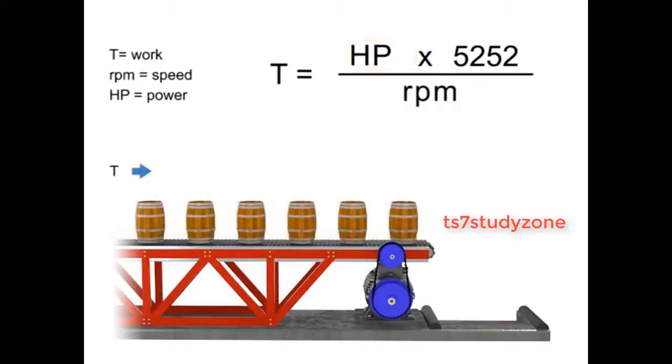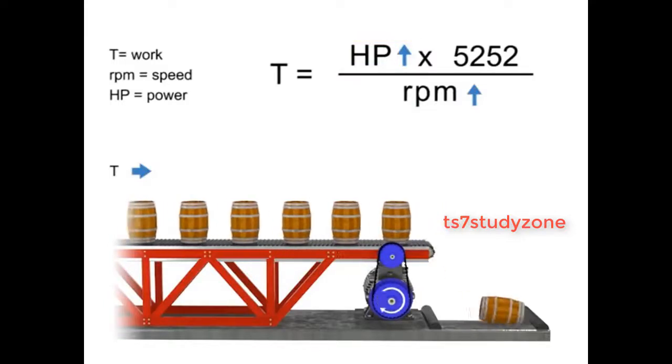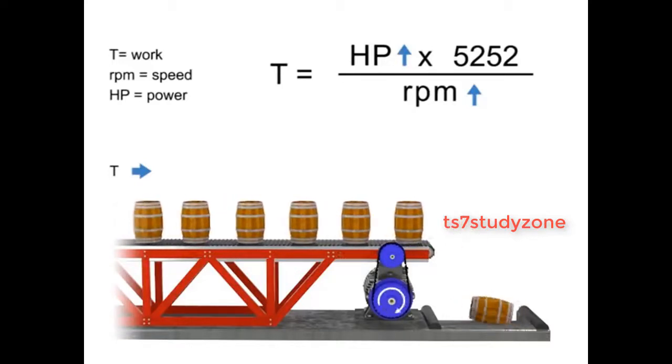Let's say we wish to keep torque constant, but want to increase the production of barrels. If the torque or number of barrels on the conveyor belt remains constant, but speed increases, then the horsepower of the motor also increases. In other words, a more powerful motor is required to produce the same amount of torque more quickly.